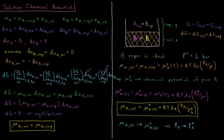If the vapor is ideal, we know that μ_A(sol) in equilibrium equals μ_A(vapor), which equals the standard chemical potential of A in the gas phase at that temperature, μ°_A(gas,T), plus RT times the natural log of the partial pressure of vapor A divided by the standard pressure (1 bar). This follows from the Gibbs energy expression for a pure ideal gas substance.